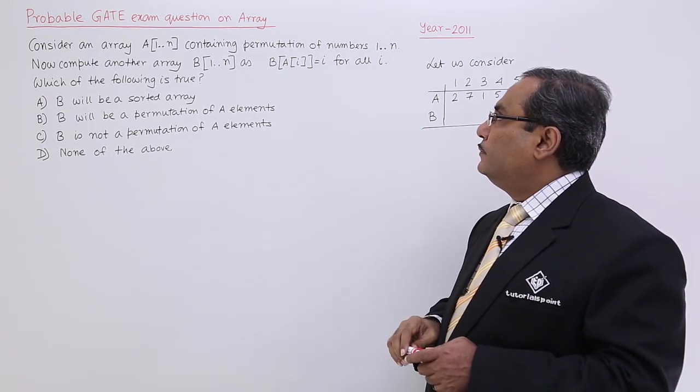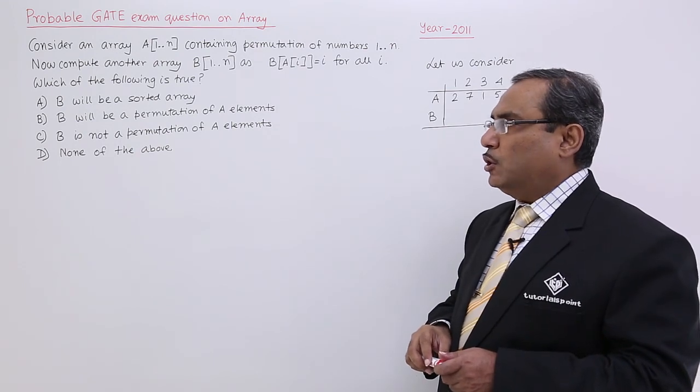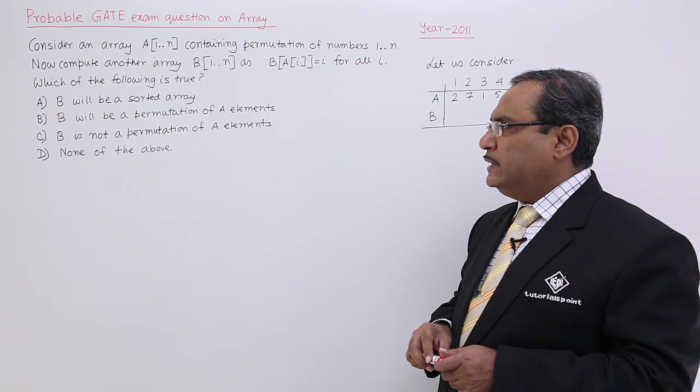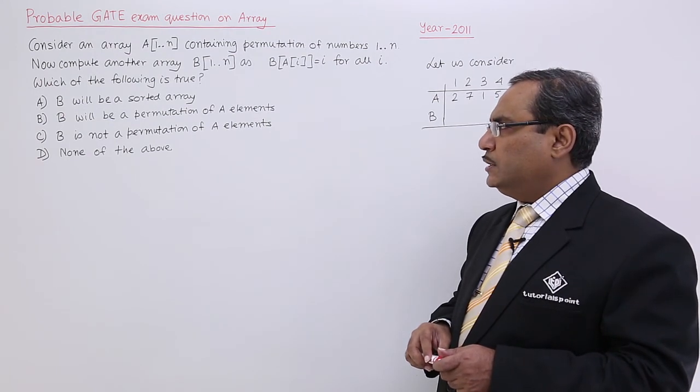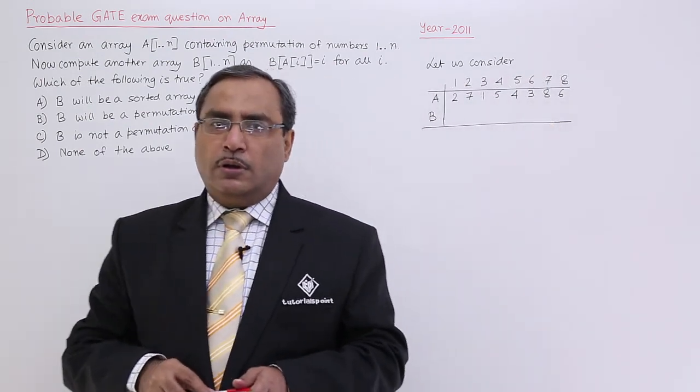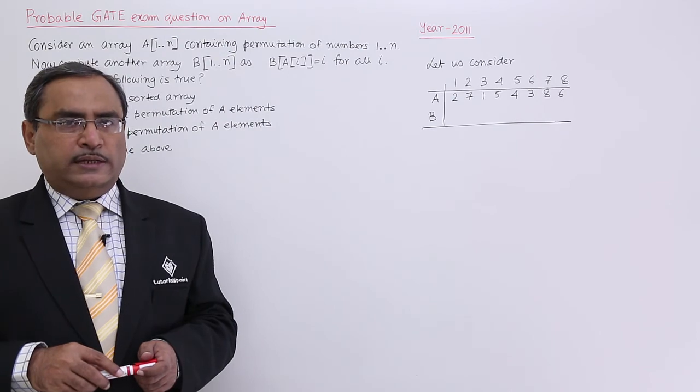Now, for all i, which of the following is true? B will be a sorted array, B will be a permutation of A elements, B is not a permutation of A elements, and last one is none of the above. Let us solve this problem by taking one instance.